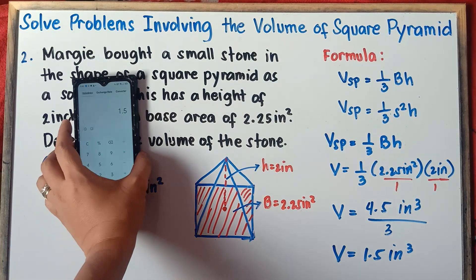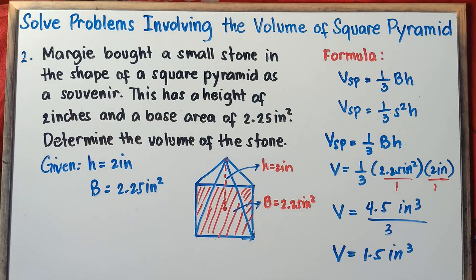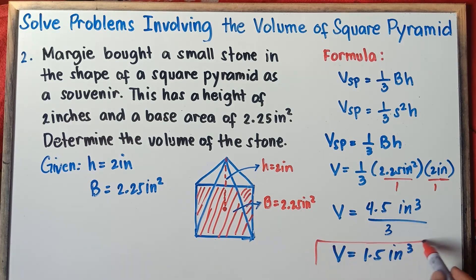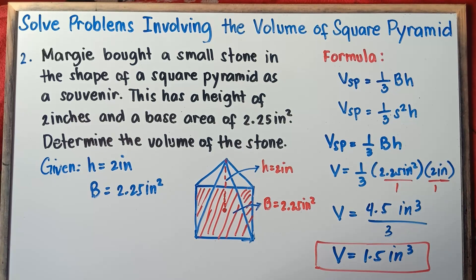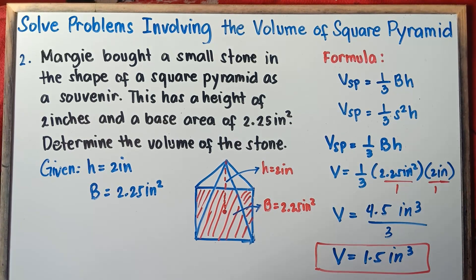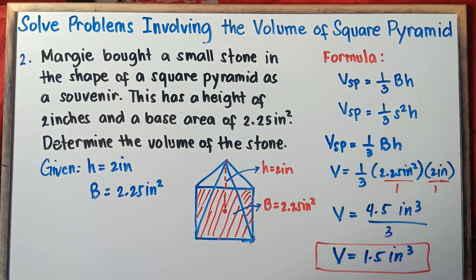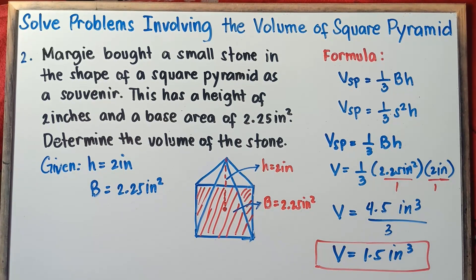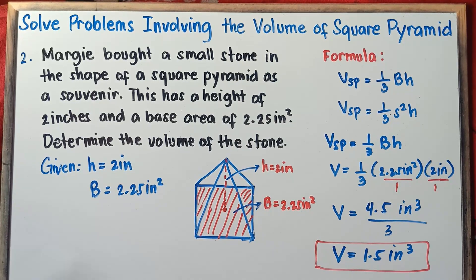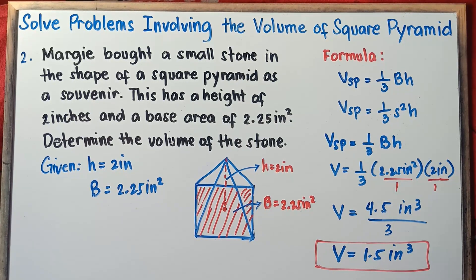That's it, class — all set for example number 2. The volume of the stone is 1.5 cubic inches. Now let's have the last example — example number 3.